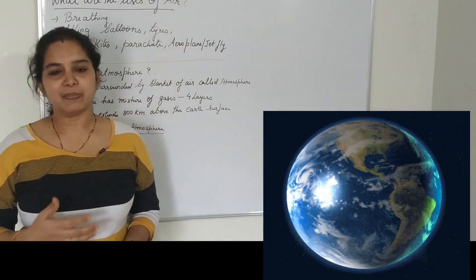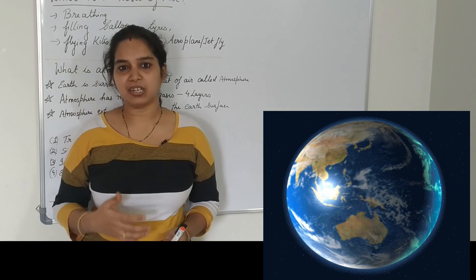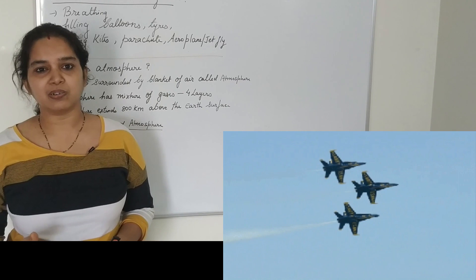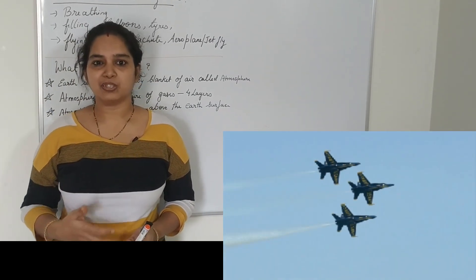And the earth is surrounded majorly by air. Air and water is very essential for us and also for the life on earth. Animals and plants all depend on the air and water so as to live.